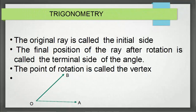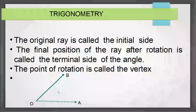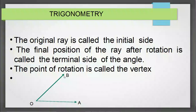The original ray — shown here as a dotted ray — is called the initial side. After rotation, the ray reaches a final position which is called the terminal side of the angle. The point of rotation is called the vertex; here O is the vertex.